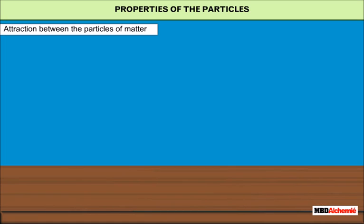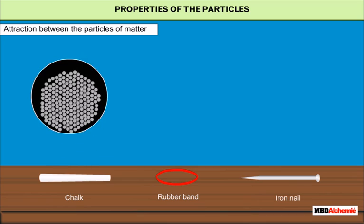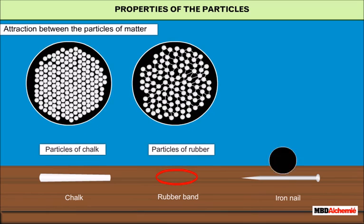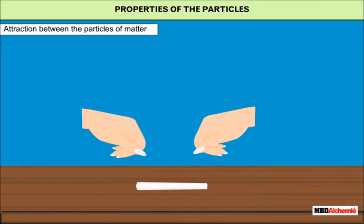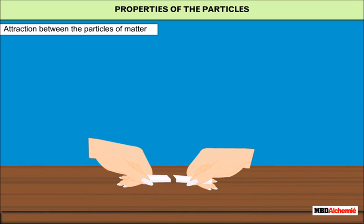Attraction between the particles of matter. Take a piece of chalk, a rubber band, and an iron nail. Here you can see the arrangement of atoms in each of the substances. Try to break the piece of chalk with your hand.